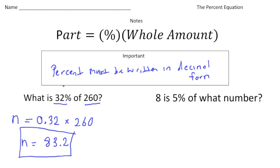But the percent equation is also useful for problems like this. This one says 8 is 5% of what number? So again, they give us the percent, but this time they give us the part and not the whole number. So the equation for this one is going to be 8, because that's the part, and that's going to equal 5% as a decimal, which is 0.05 or 5 hundredths,